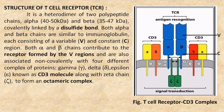each consisting of a variable and constant region. Both alpha and beta chains contribute to the receptor formed by the variable regions and are also associated non-covalently with four different complex proteins: gamma,